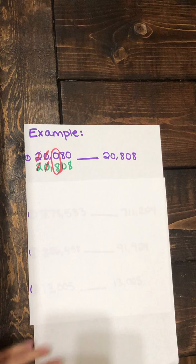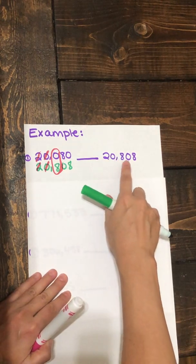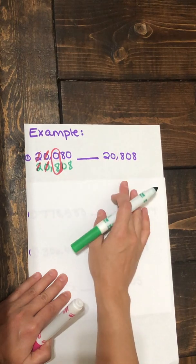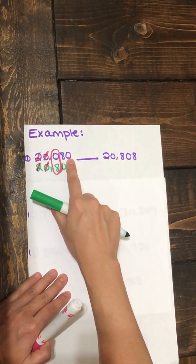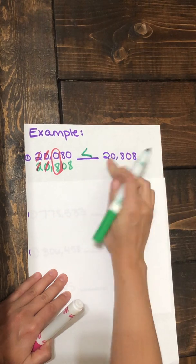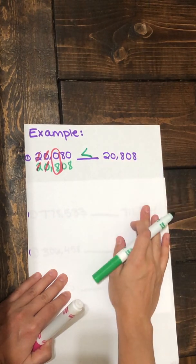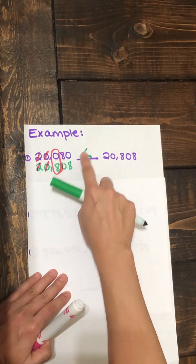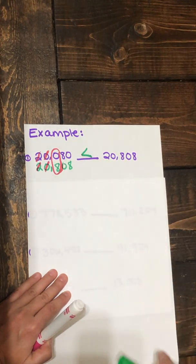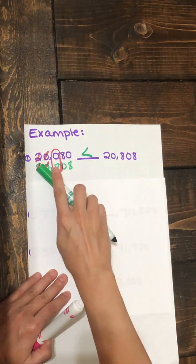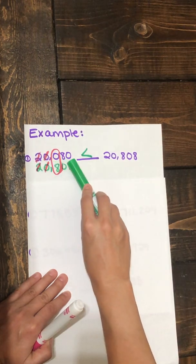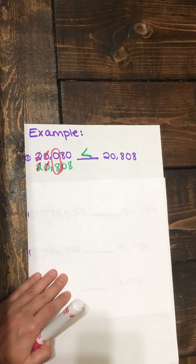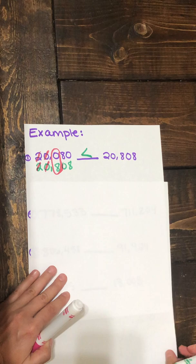So that means 20,808 is greater than 20,080. That means 20,080 is less than 20,808. And remember our trick, the symbol, we can think of this as a mouth and it opens towards the largest number. So this sentence reads 20,080 is less than 20,808. Let's look at another example.